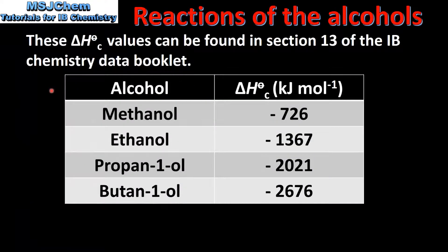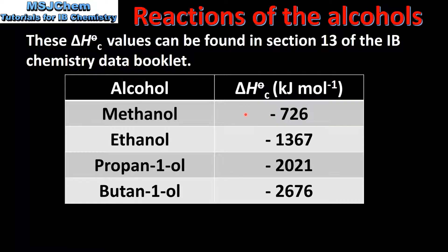Finally, we look at the enthalpy change of combustion values of the first four members of the homologous series, from methanol to butan-1-ol. The first thing we notice is that these are negative enthalpy changes, which means that the reactions are exothermic. The second thing we notice is that as we go down the table, the enthalpy change becomes more negative.